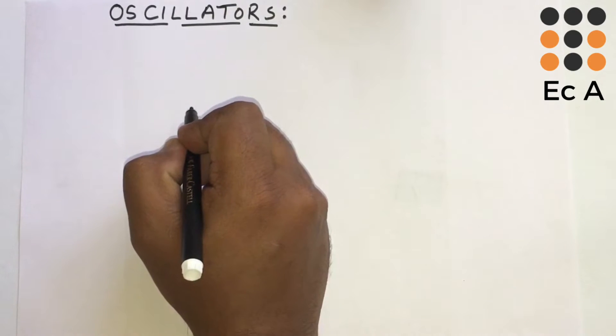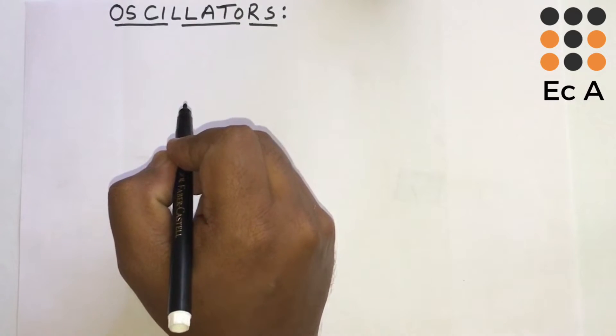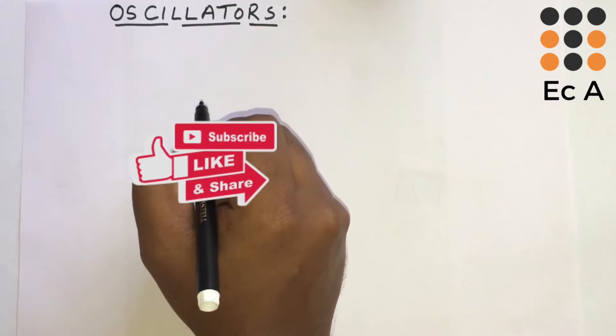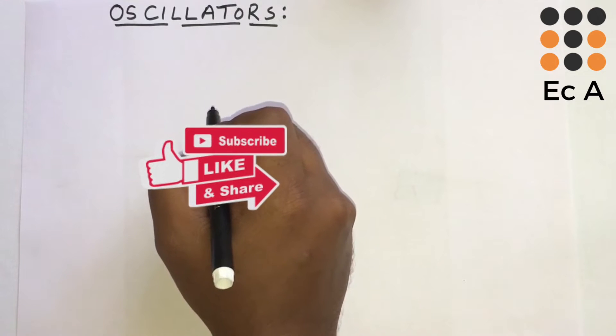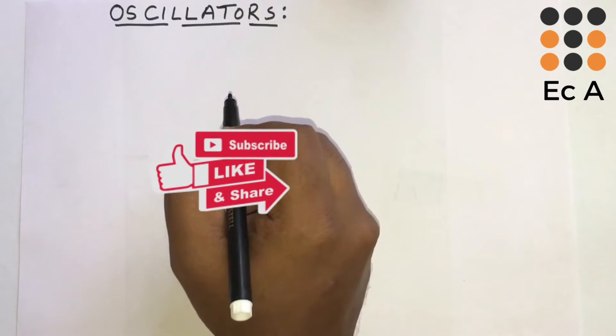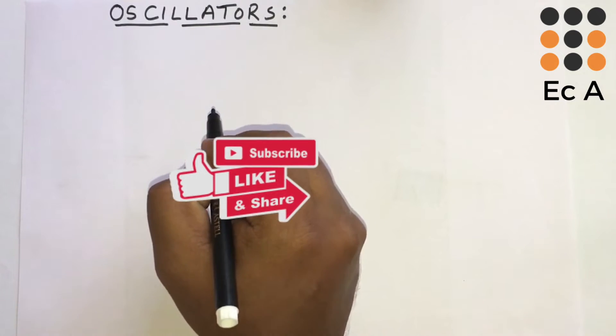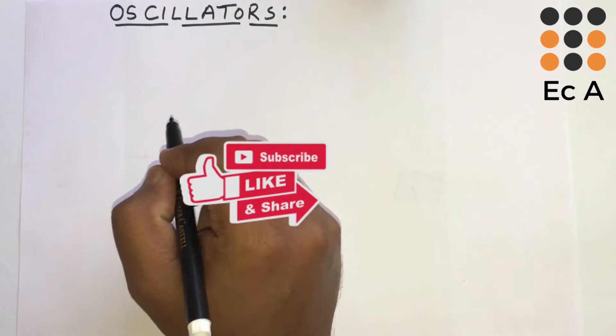Hello friends, welcome to EC Academy. In this lecture, we will understand what is an oscillator and we will understand the Barkhausen criteria.